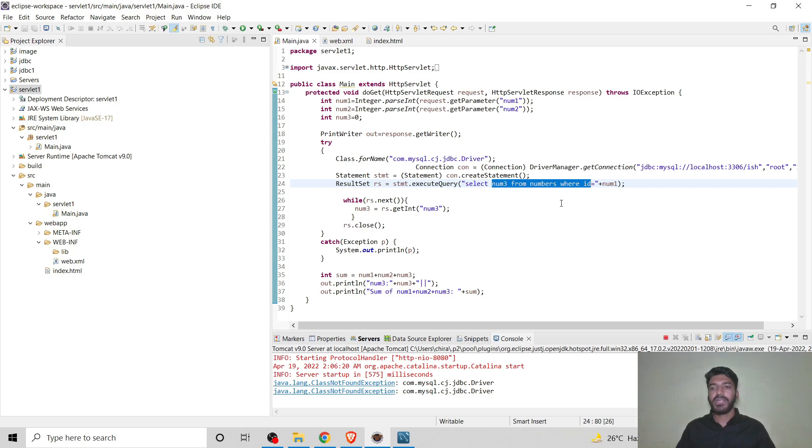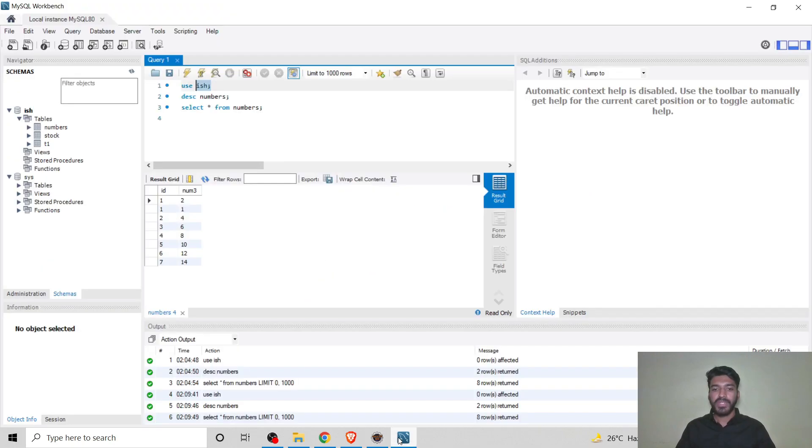Statement, this line is used to create the statement which will be used for calling the query to execute. Here we are executing the query, that is select num3 from numbers where id is equal to num1. It means that if the user entered 2, then 2 will be the id for num3. That is, if the user entered 2 as num1, then the id will be for num3, and num3's id will be 2, so num3 will be 4.